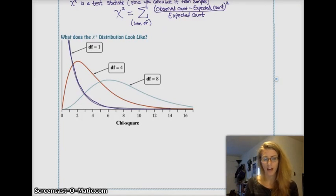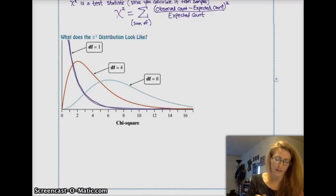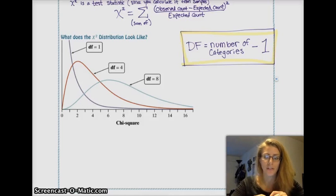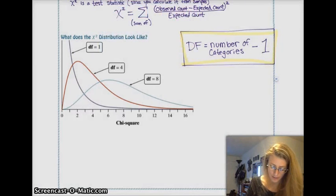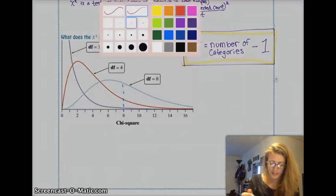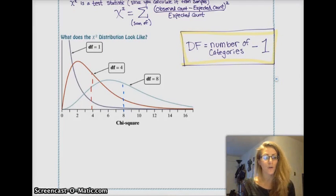The important thing to note is that degrees of freedom for chi-squared is no longer sample size minus 1 — it's actually the number of categories minus 1. So if you have 5 colors of M&Ms, your degrees of freedom is 4. Something else interesting about the chi-squared distribution: the mean is actually equal to the number of degrees of freedom. So on the curve for 8 degrees of freedom, the mean is exactly at 8, and for degrees of freedom 4, the mean is at 4.